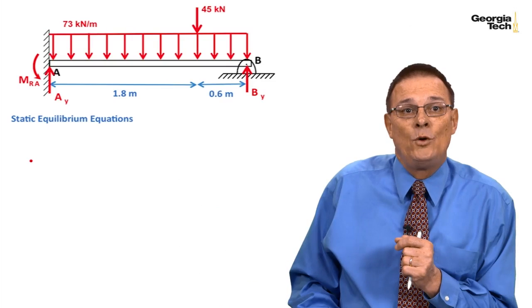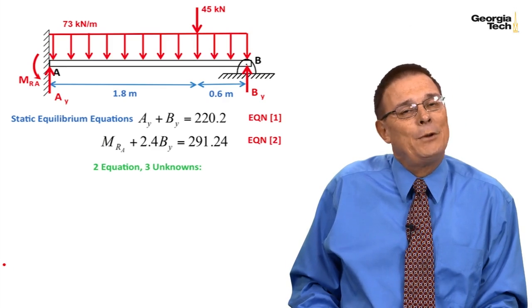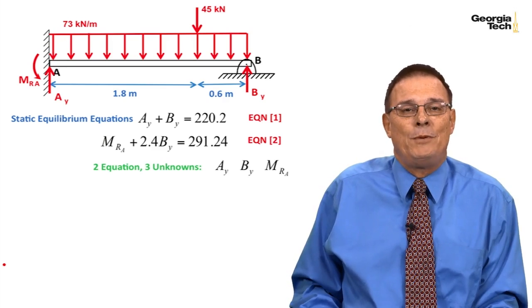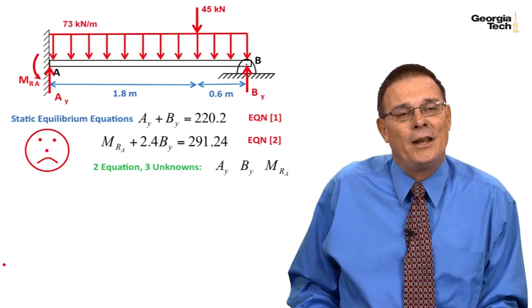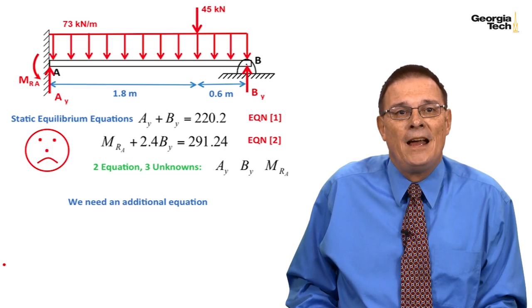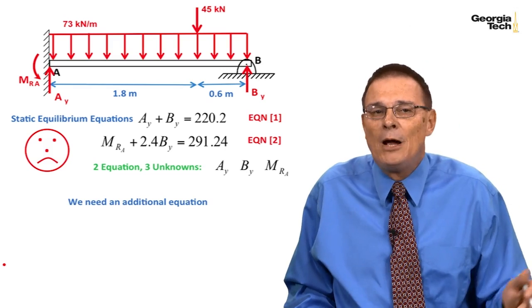Now I have two equations. That's the good news. The bad news is that we have three unknowns: A_Y, B_Y, and M_A, the moment reaction at A. That gives us a sad face. We're going to need an additional equation. So how might we go about this?